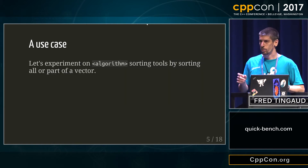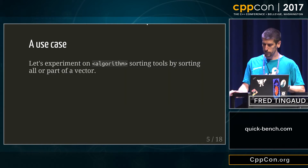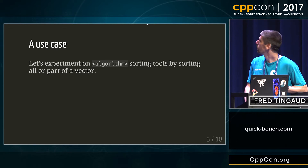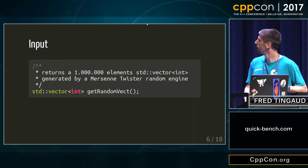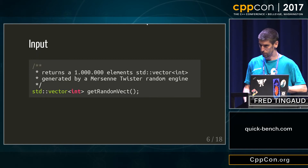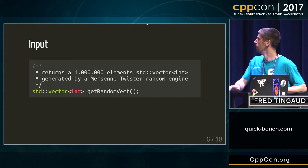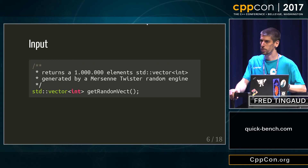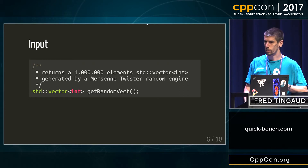We are going to try a little experiment with a few algorithms from the STL. I made a function which generates one million random numbers using Mersenne Twister — I copy-pasted it from Stack Overflow.